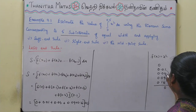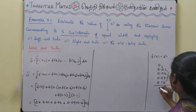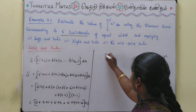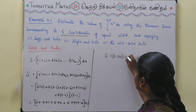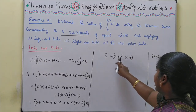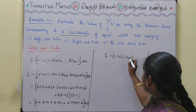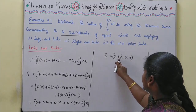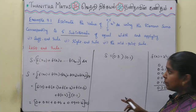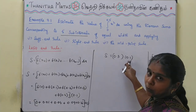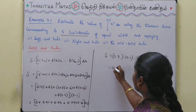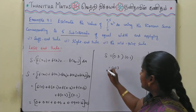Adding these values: 0 + 0.01 + 0.04 + 0.09 + 0.16 = 0.30. Then multiplying by delta x = 0.1: 0.30 × 0.1 = 0.03. So the answer for the left-end rule is 0.03.